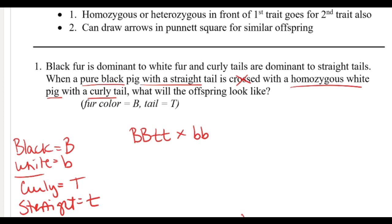Crossed with a homozygous white pig, so white again is homozygous recessive. Curly tail - curly in this case is a dominant trait, so I don't know if it's going to be homozygous or heterozygous. So I go back to the word that was used in front of the first trait, which is homozygous, so that means it's homozygous curly tail, so two capital T's.